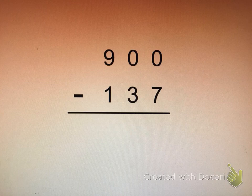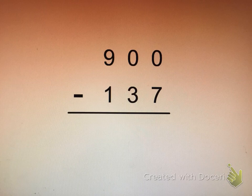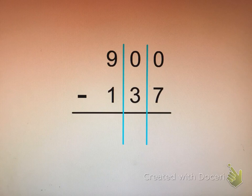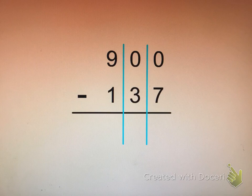So let's try this one. In the problem 900 take away 137 we've neatly stacked our numbers paying close attention to place value. We start by subtracting the numbers in our ones place first. Now we can see that zero take away seven cannot be done.